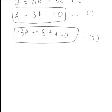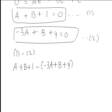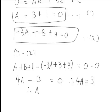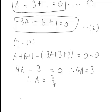We now solve these simultaneous equations for a and b. Computing equation 1 minus equation 2 eliminates b: (a + b + 1) − (−3a + b + 4) = 0, giving 4a minus 3 equals 0, so a equals 3/4. Substituting back into equation 1: 3/4 plus b plus 1 equals 0, which gives b equals negative 7/4.